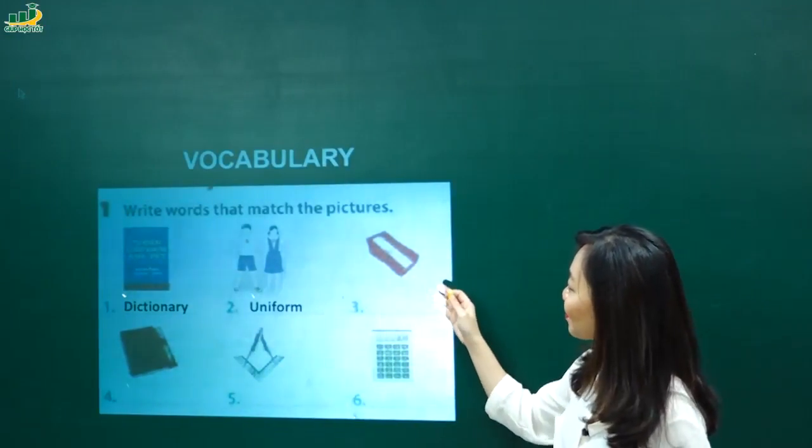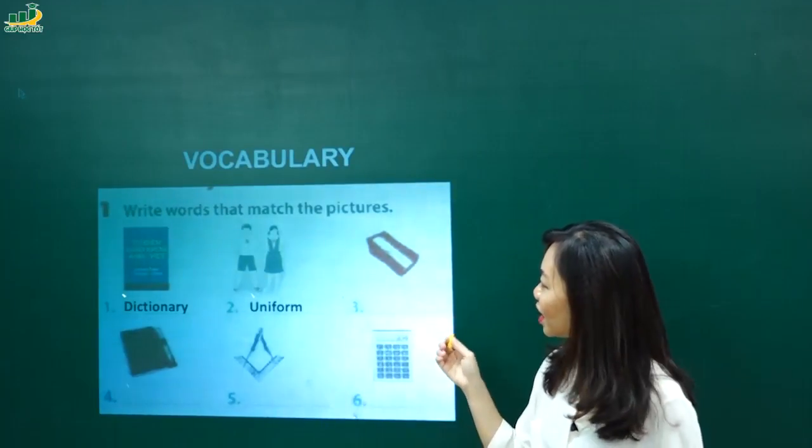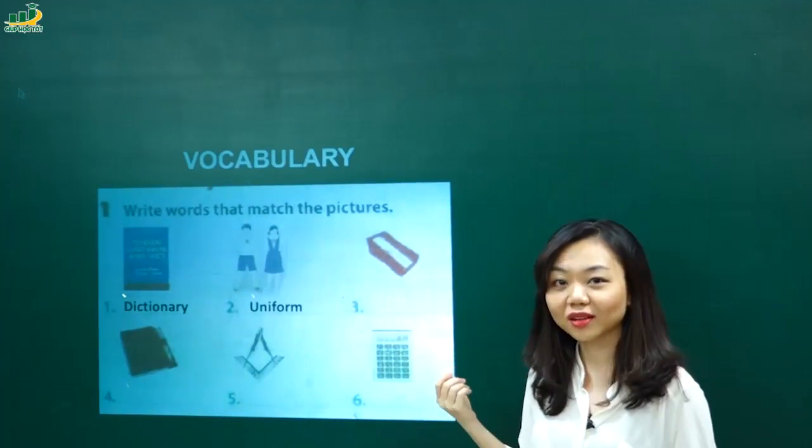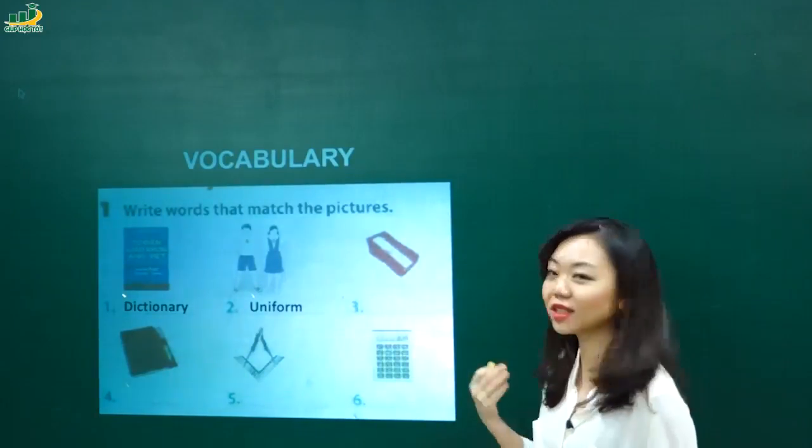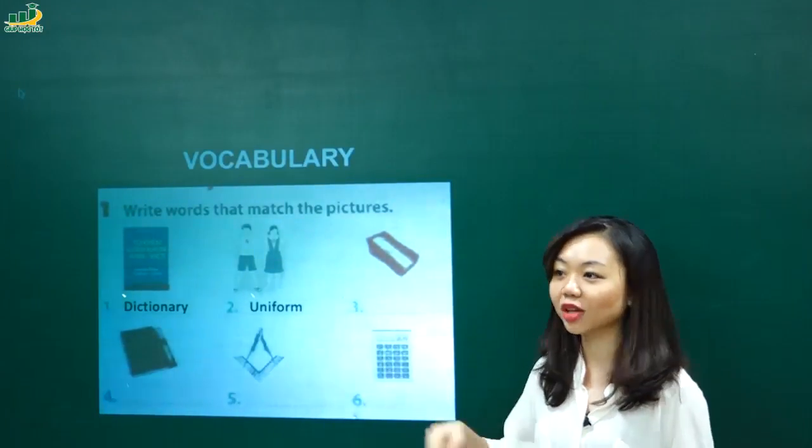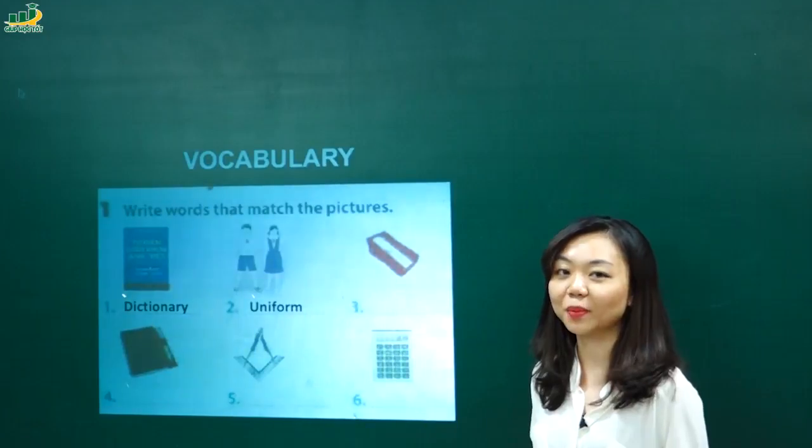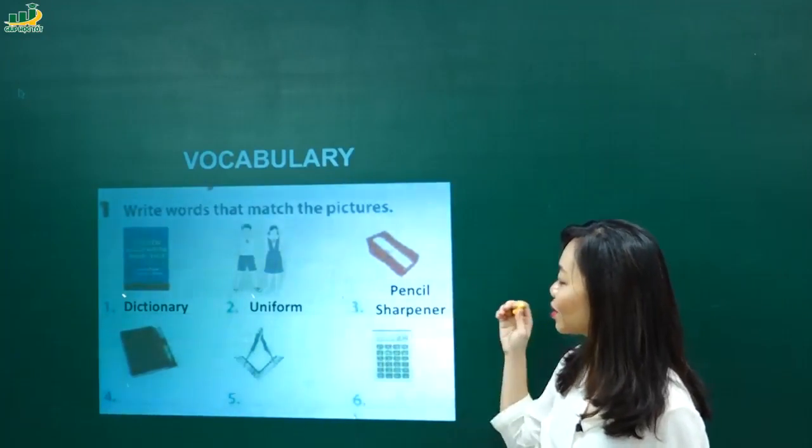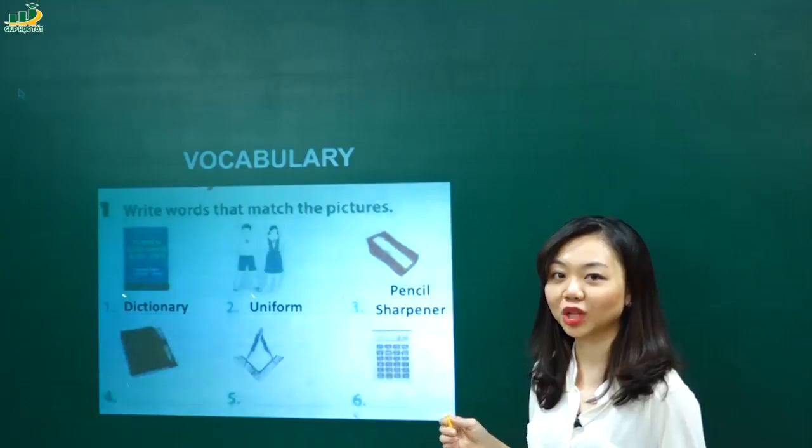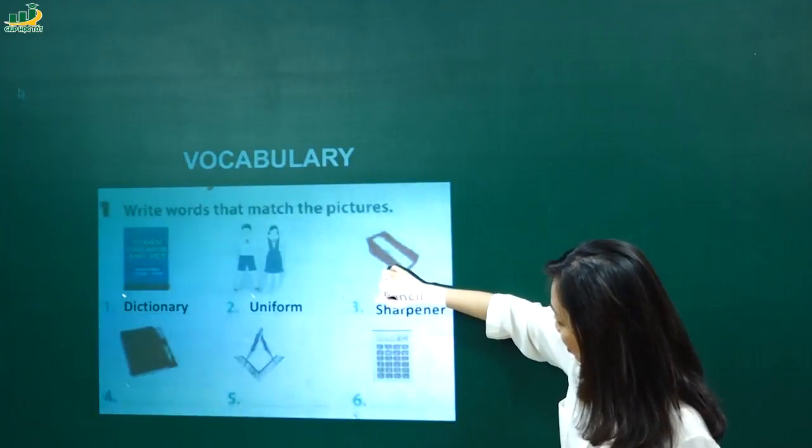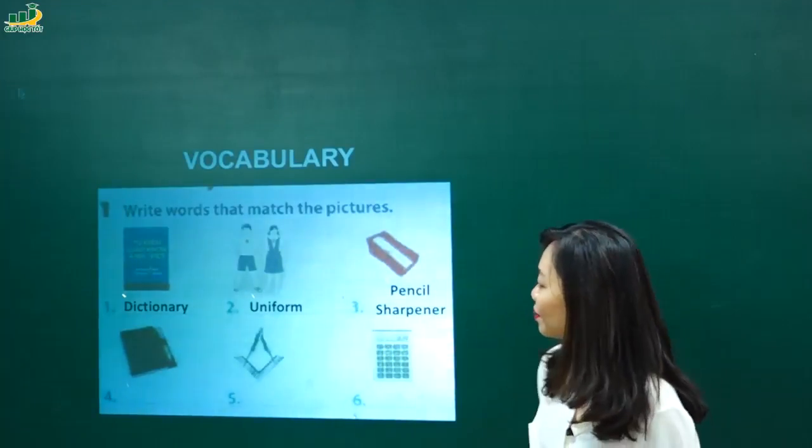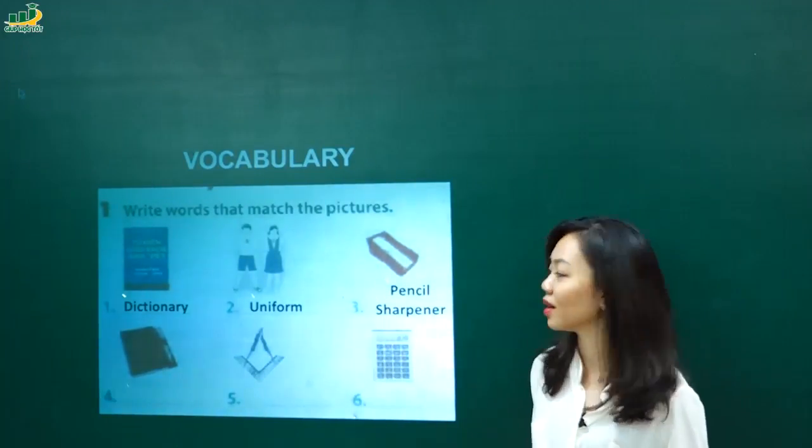Rồi, tiếp theo mình có hình gì đấy nhỉ? Các em nhìn có thể là hơi mờ một tí. Nhìn trong sách thì nó sẽ rõ hơn. Đây chính là cái gọt bút chì. Mình có nếu gọt bút chì là gì không? Bút chì là pencil. Và cái gọt để làm cho bút chì sắc hơn nó là sharpener. Vậy mình có cái từ là pencil sharpener. Pencil sharpener. Chú ý đọc nhé. Pencil trong âm đầu tiên này. Sharpener cũng đầu tiên luôn. Cô đánh giống như thế này. Mình đọc lại nhé. Pencil sharpener. Good.